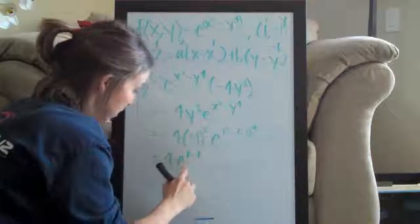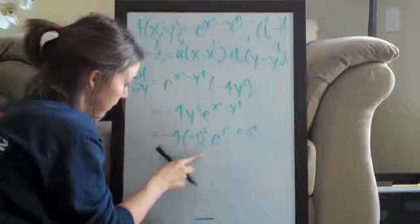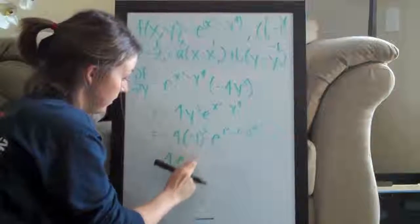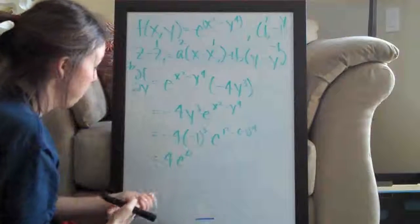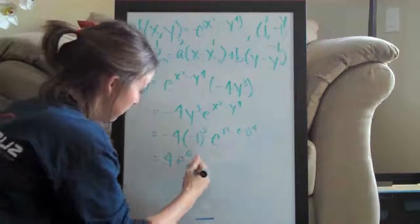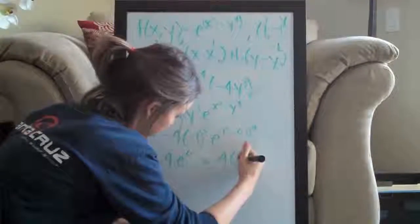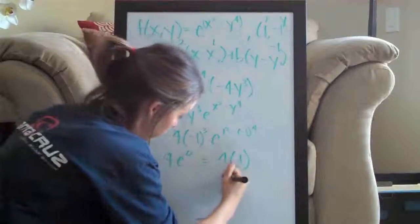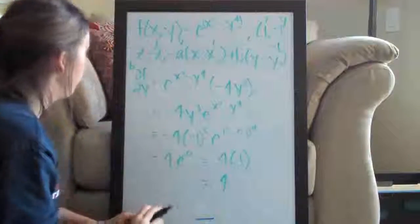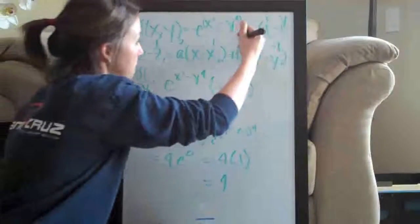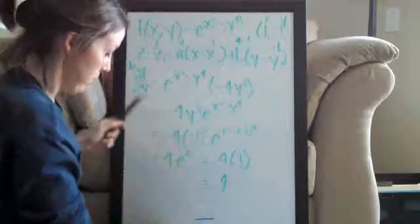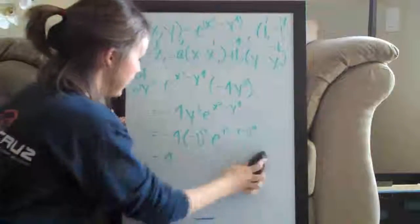Which means we've got e to the zero here because 1 minus 1 is zero. e to the zero is 1. So that's 4 times 1, which is 4. So we solved for b, we got 4. So there we go. That's everything that we needed to do.